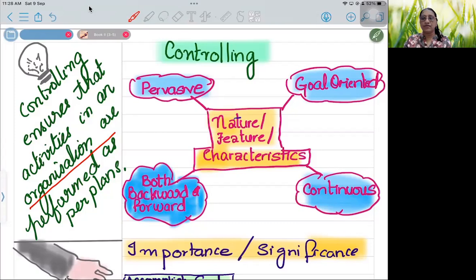It is pervasive. Supervisory level controlling is on the workers, on the raw materials, on the time. Middle level controlling is on the actions that have to be taken. And at top level, it's on policy formulation, strategy. It would be done at all levels. In all organizations, whether it is a small organization or big organization, profit or non-profit, lower level or higher level, everywhere. That is pervasive.